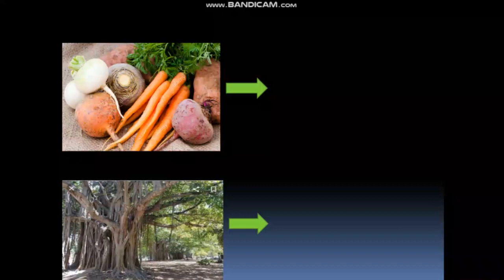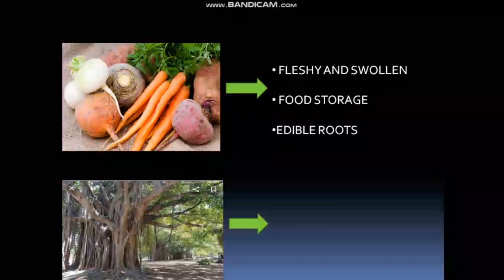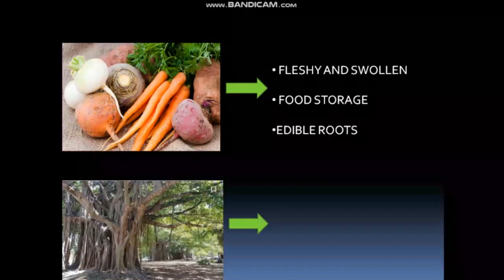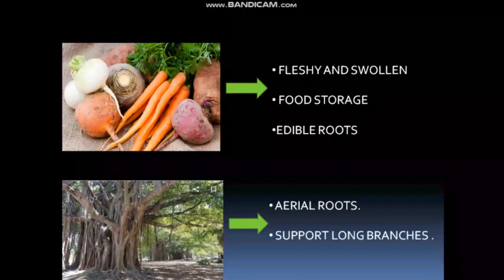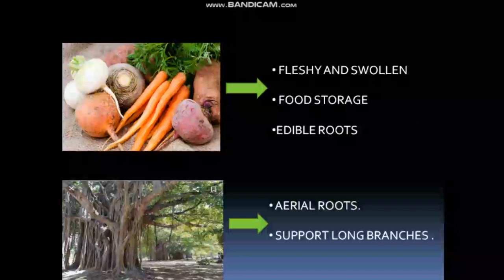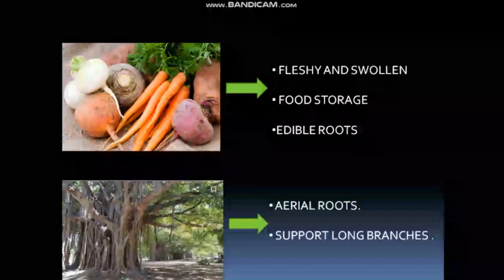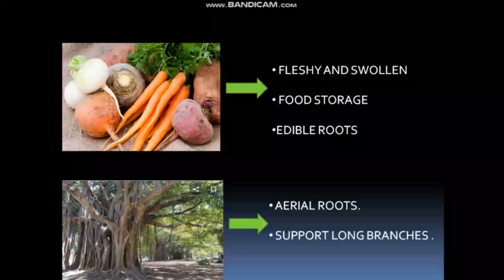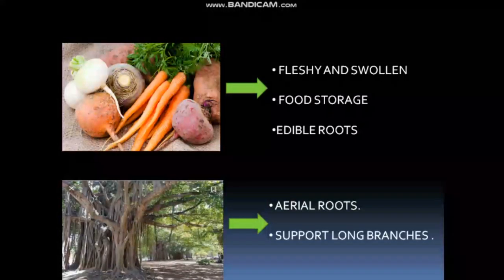You all eat carrot, beetroot, and turnip — but do you know what these are? They are roots! Some roots are edible, meaning you can eat them. These roots are also swollen and fleshy because they store food for the plant. Some roots, like those of the banyan tree, are very large and hang from branches. These are aerial roots, which provide support to long branches.